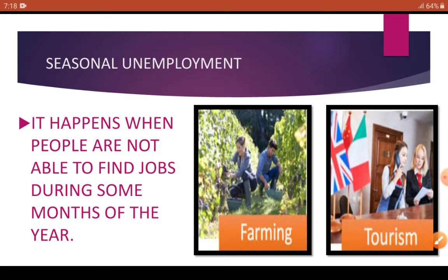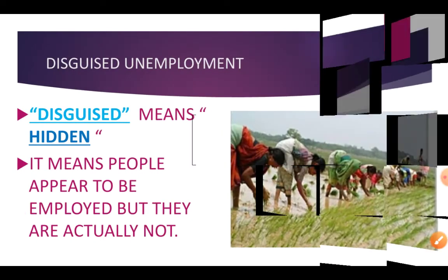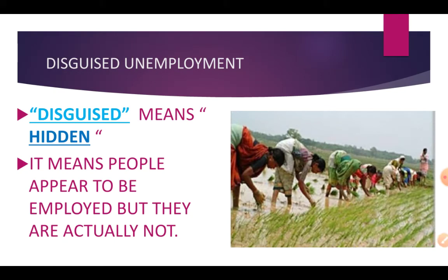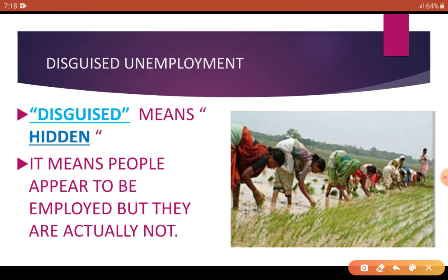OK, next one is disguised unemployment — it is very important. Disguised means hidden, chipa hua. Its meaning is that people appear to be working but their presence there is not actually needed. Now you might wonder how that can be possible — it is possible, let's understand with an example.